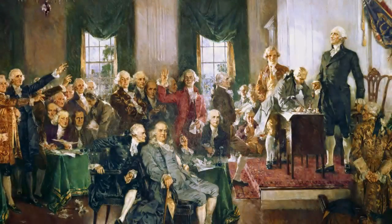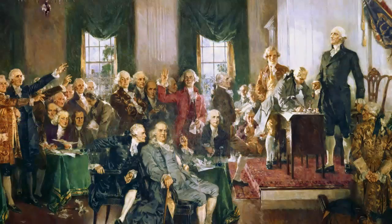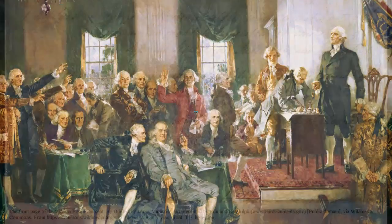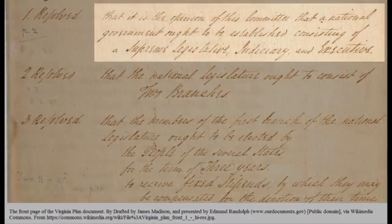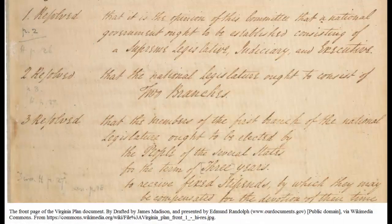In such a system, the federal government, or central government, is given the greater power it needs, but that power is divided among smaller units or branches, creating a system of checks and balances that would prevent it from becoming abusive, and states still retain the right to govern themselves in many areas. His plan, which became known as the Virginia Plan, with its three distinct branches of government, would form the foundation upon which the Constitution was built, and so Madison has often been called the father of the Constitution.